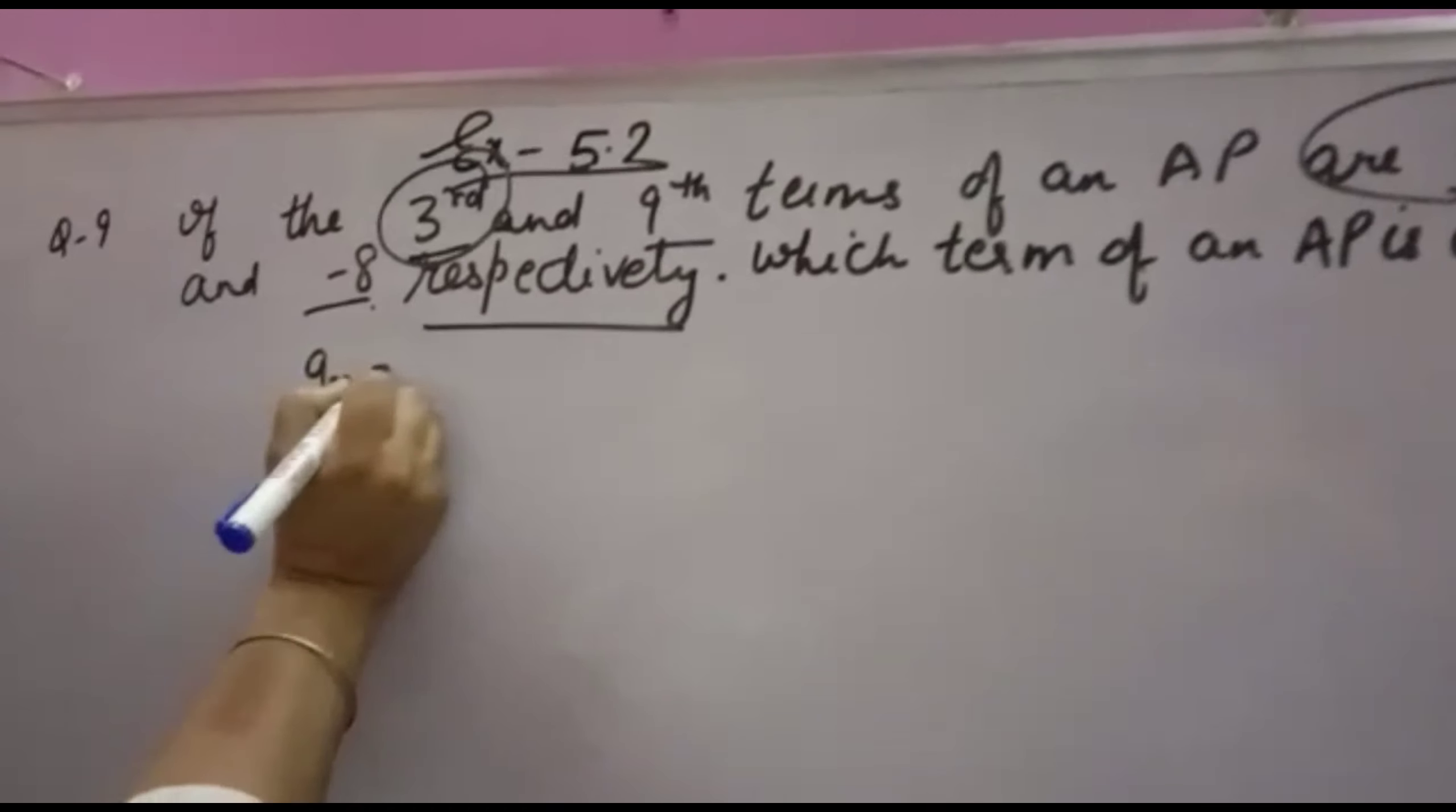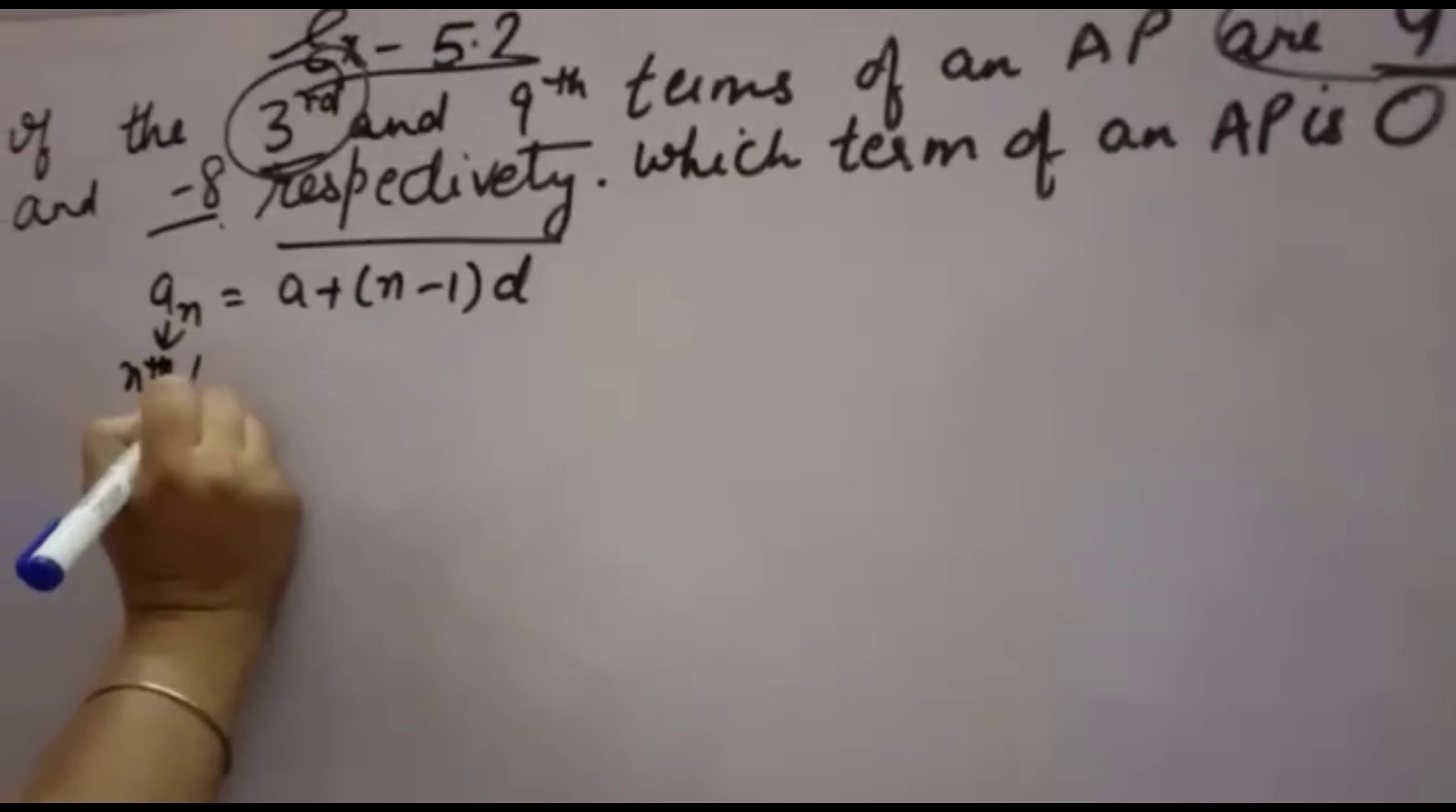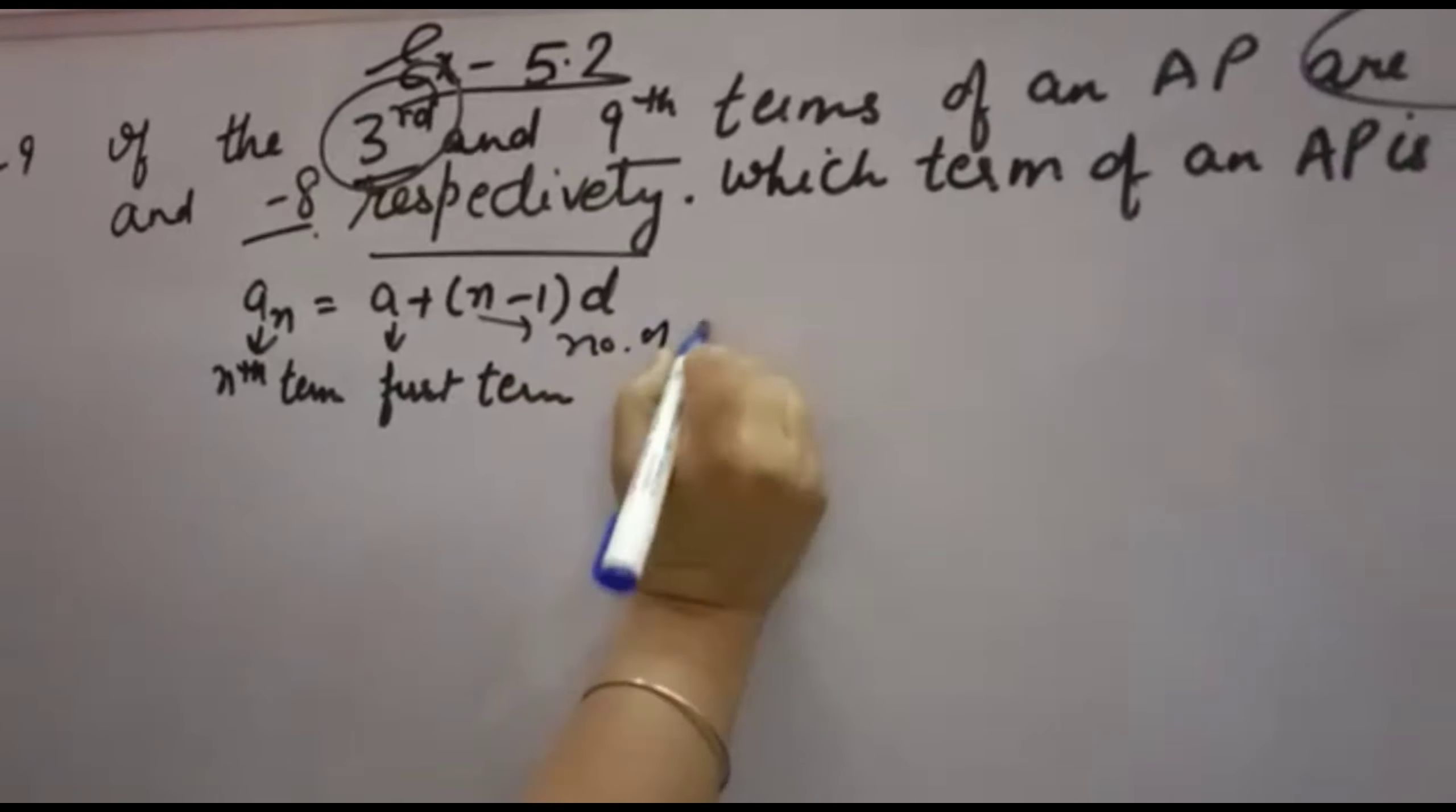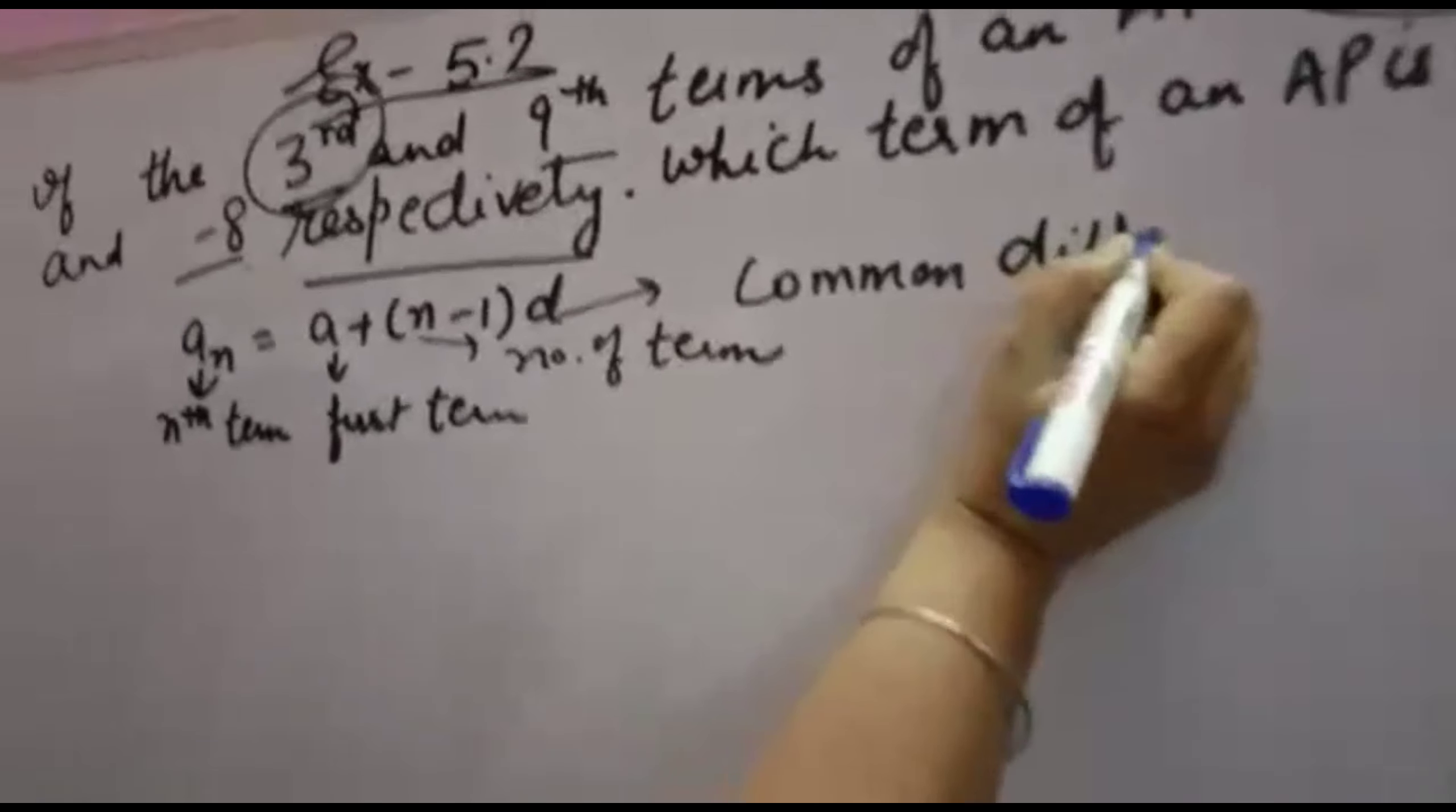The formula we will use is An = A + (n-1)D, where An is the nth term, A is the first term, n is the number of terms, and D is the common difference - the difference between two consecutive terms.